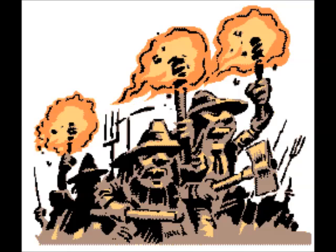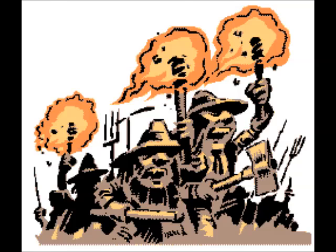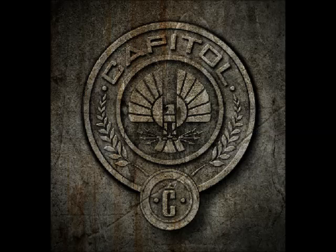In this next form of external conflict, we see man vs. society. In this type of conflict, our character is going against the overall general beliefs of society, whether it's against social norms or against the whole society or nation in general. For example, in the novel The Hunger Games, we see Katniss going against the whole society of the capital.